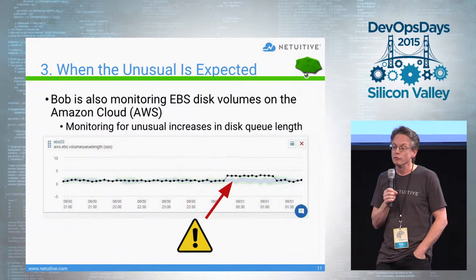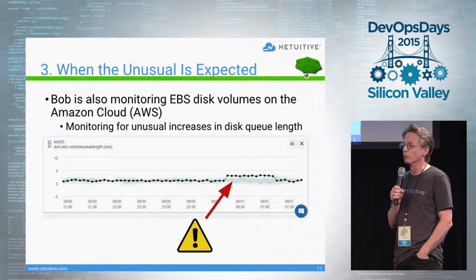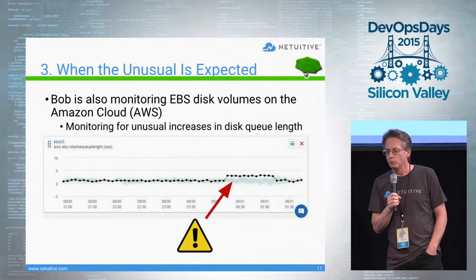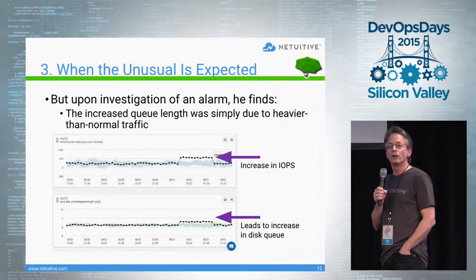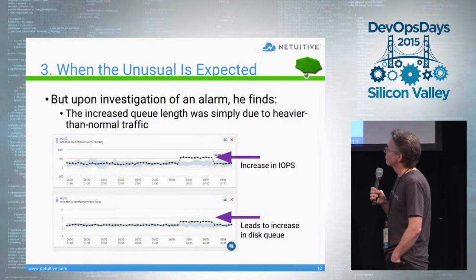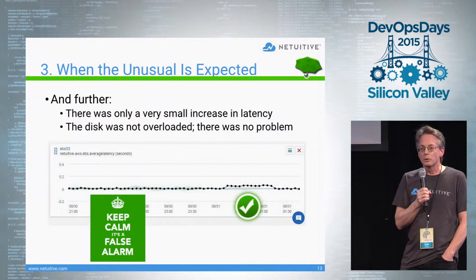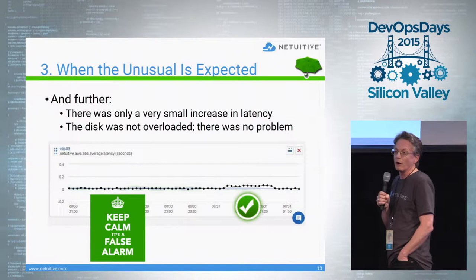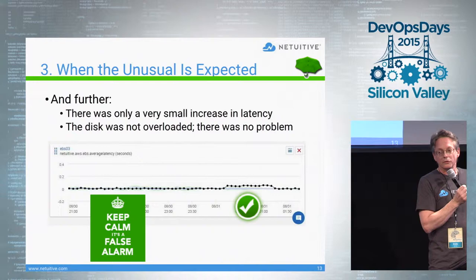Bob is also an AWS user and he wants to monitor the performance of his EBS disk volumes. He starts monitoring for unusual increases in the disk queue length. But when he investigates one of the alarms, he finds the increase in queue length was really just due to an increase in traffic to the disk. There's an increase in IOPS directly leading to an increase in the disk queue, and only a very small increase in latency — not unexpected given the increased volume of traffic. So while the activity may have been unusual for this disk at this time of day, it's not necessarily a problem and it was a false alarm.